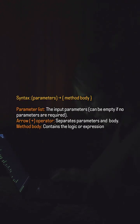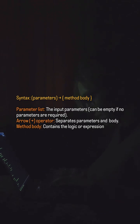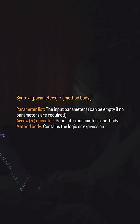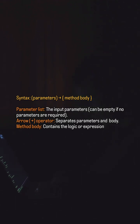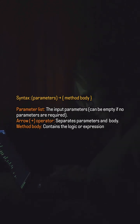Syntax: Parameter list — the input parameters can be empty if no parameters are required. The arrow operator separates parameters and body. The method body contains the logic or expression.